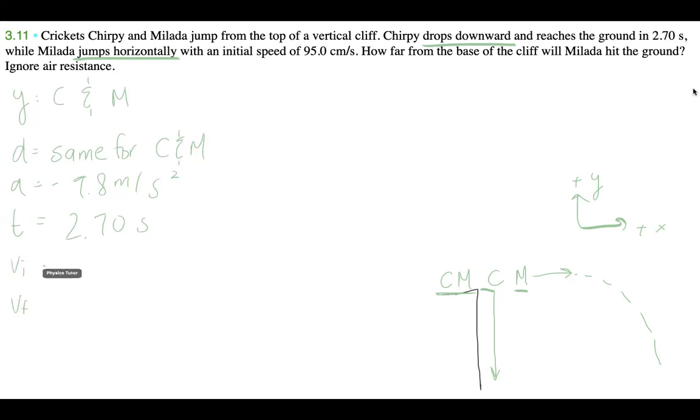We don't know what their vi or vf is. Actually, vi is 0. Vi is going to be 0 meters per second in the y component for both of them. Vf, we have no idea, but we'll get back to that if we need it.